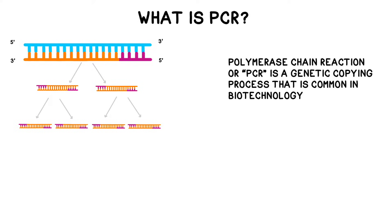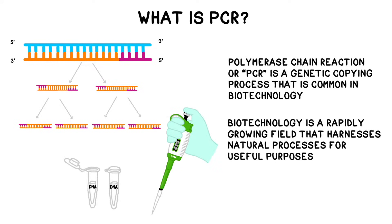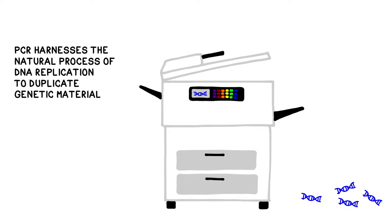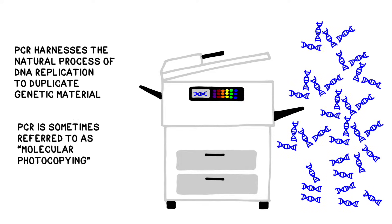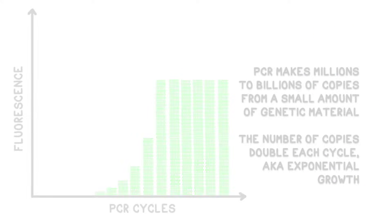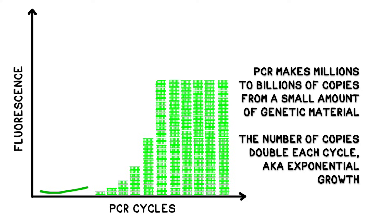Polymerase chain reaction, or PCR, is a genetic copying process used in biotechnology. Biotechnology is a rapidly growing field that harnesses naturally occurring processes for useful purposes. In the case of PCR, it harnesses the process of DNA replication to make copies of genetic material. PCR is sometimes referred to by the nickname molecular photocopying. It makes millions to billions of copies from a small amount of genetic material, and the number of copies doubles with each cycle of the reaction, resulting in exponential growth.